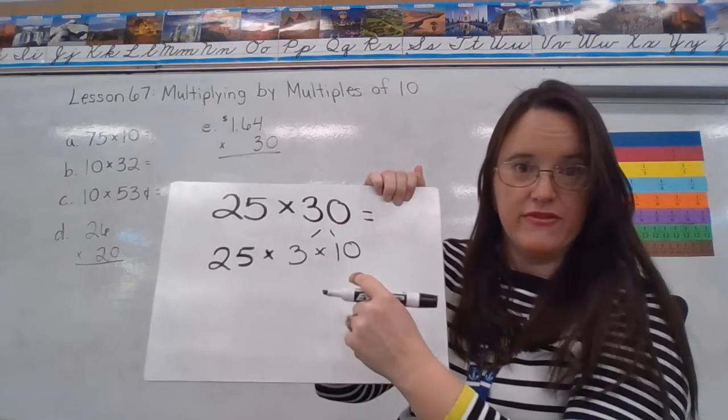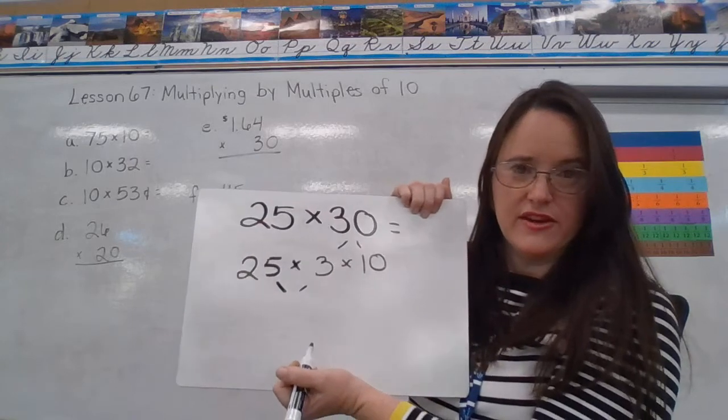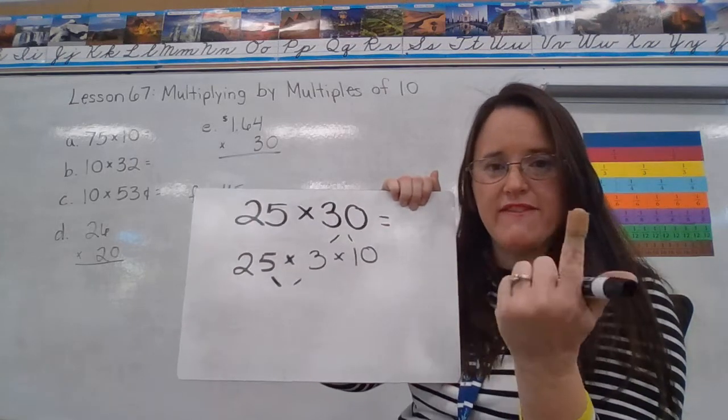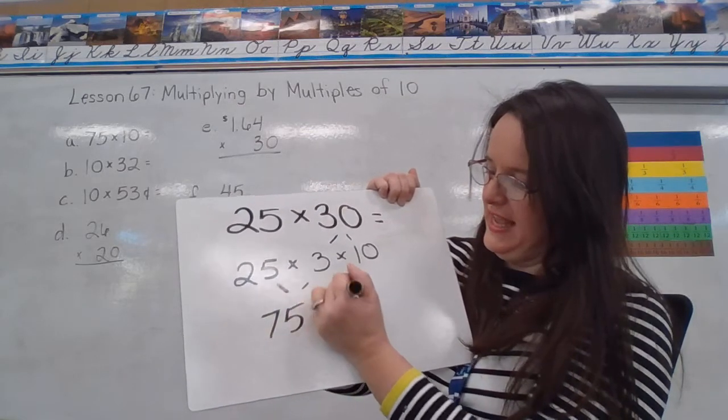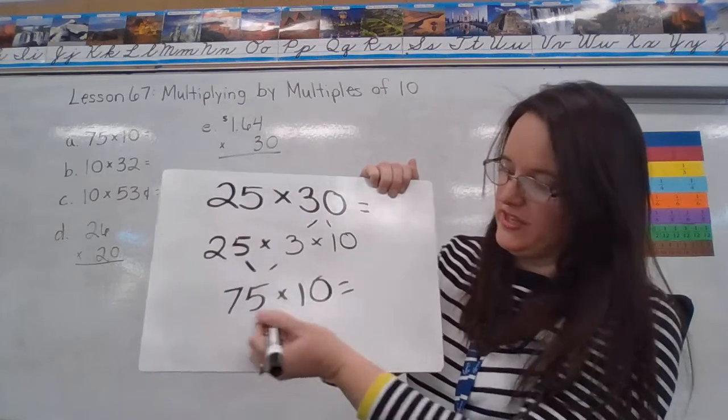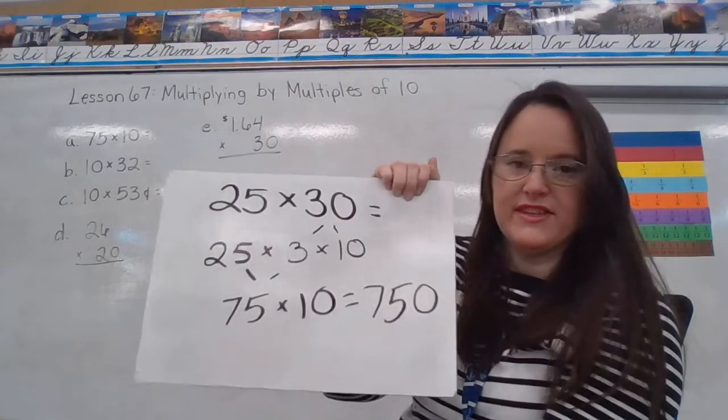We know the trick for times 10, so we just do our 25 times 3 here. We're counting quarters, 25, 50, 75. Then times 10 for our tens trick, we just tack a 0 on at the end of our 75 there.